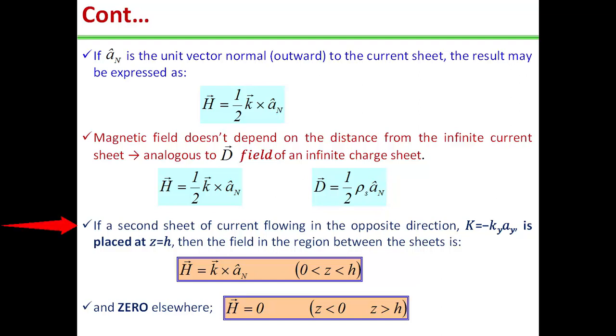If a second sheet of current flowing in the opposite direction, that means K is equal to minus K_y a_y, is placed at a height z is equal to h, then field in the region between these two sheets is H is equal to K cross a_n. Therefore, for z varying from 0 to h, we will have the magnetic field intensity H as K cross a_n, and 0 elsewhere. If z is negative or greater than h, we will have magnetic field intensity H as 0. Thus, we will only have the magnetic field intensity in between the two sheets. Thank you for watching this video.